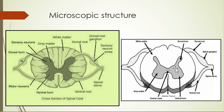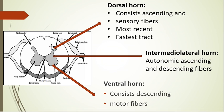The gray matter has dorsal horn, ventral horn, and intermediolateral column divisions because the functions of these areas are different. The dorsal column is concerned with ascending fibers and sensory information — fine touch, proprioception, position — every sensation is transferred to the higher center, the cerebrum, via the dorsal column. Synapses occur at the dorsal horn.